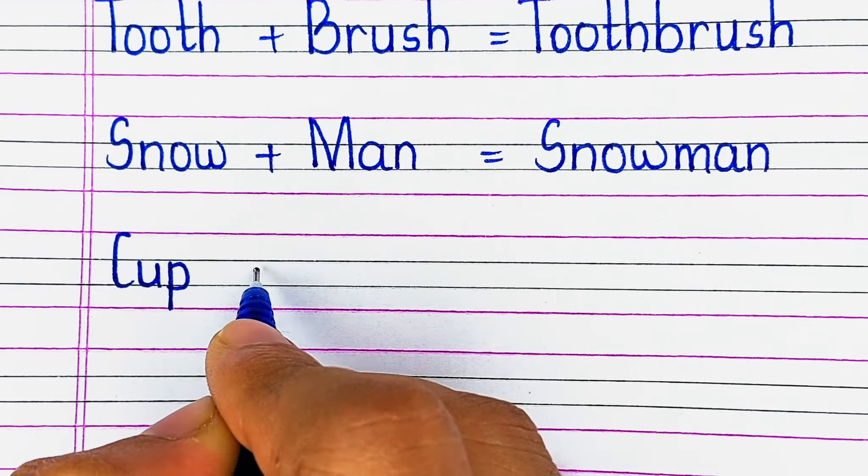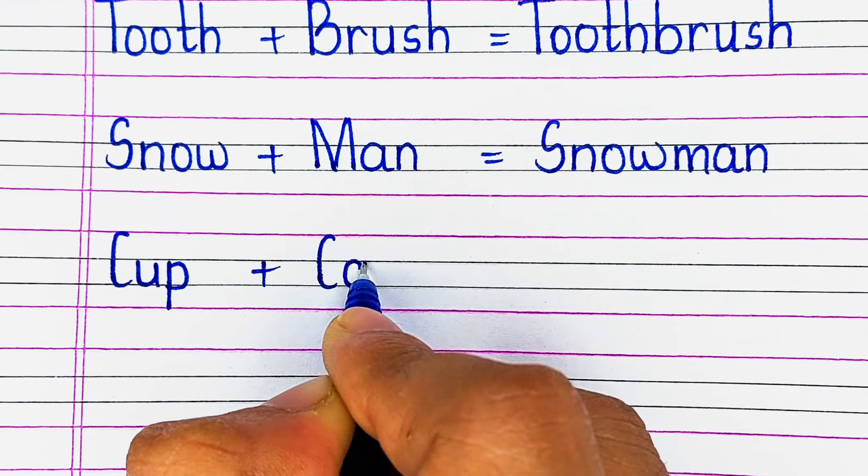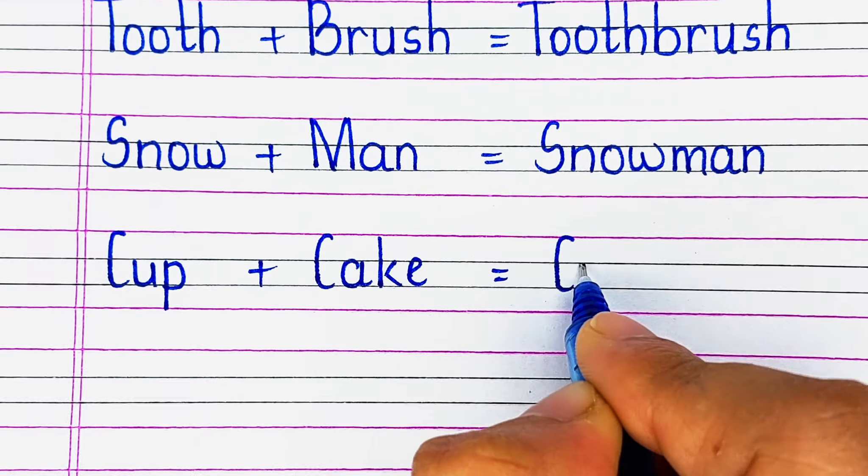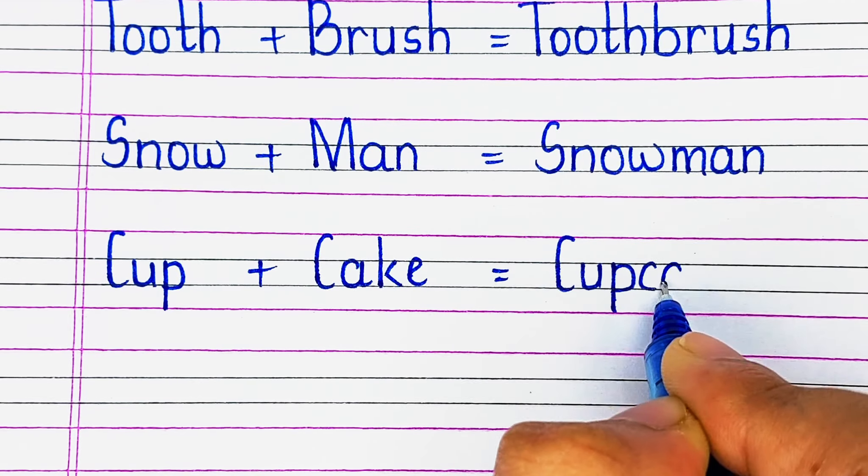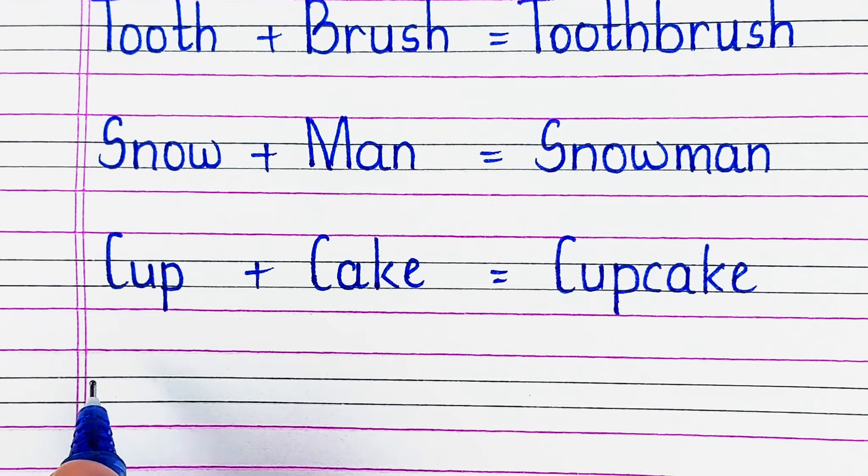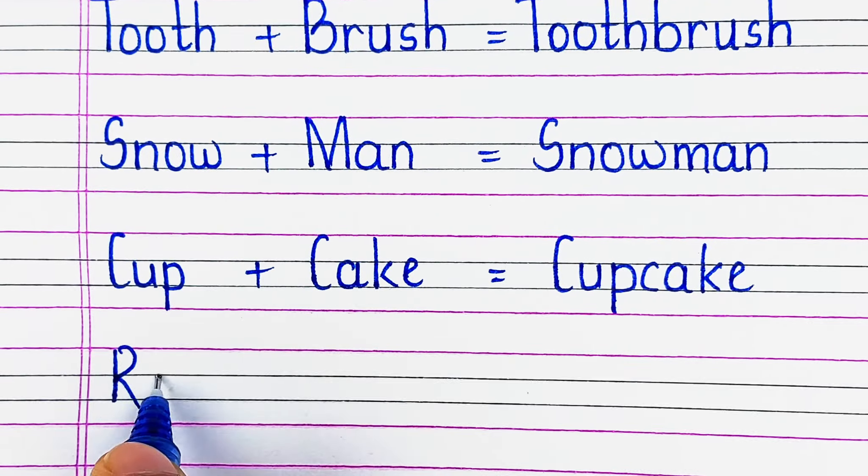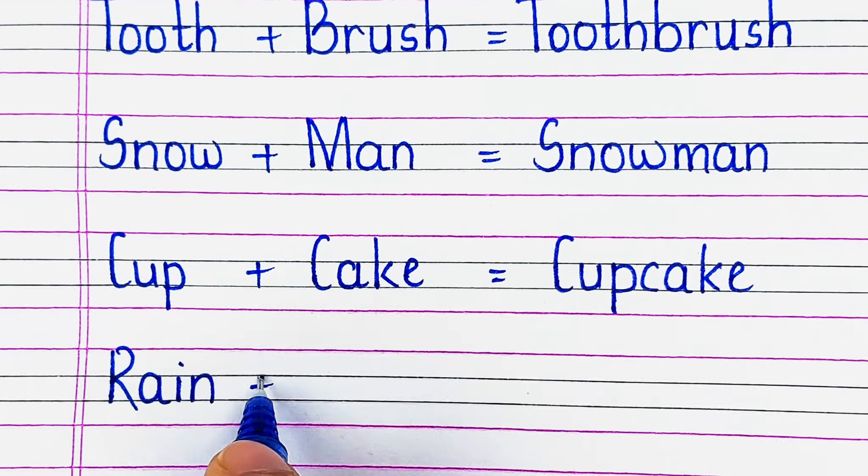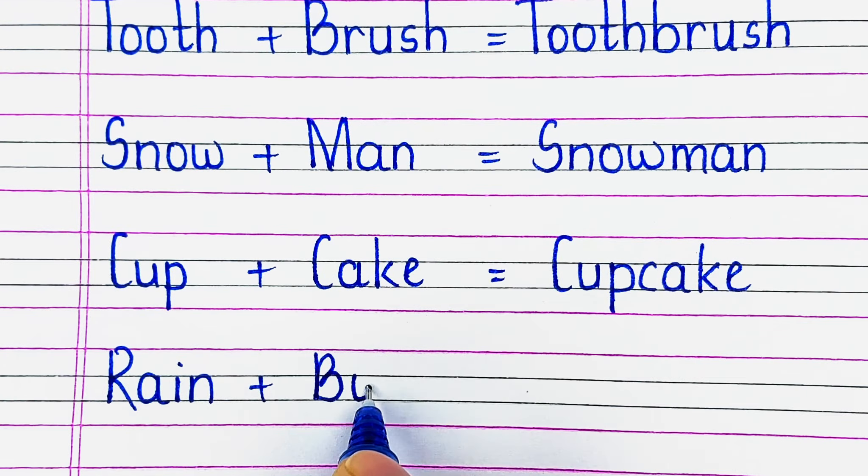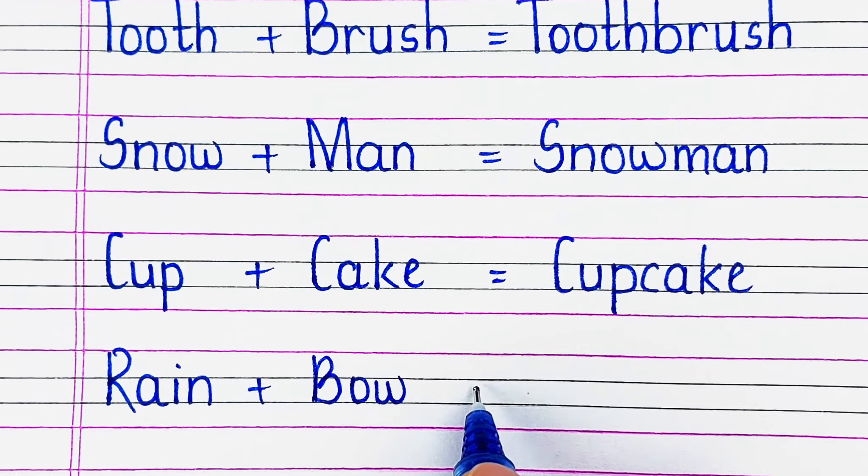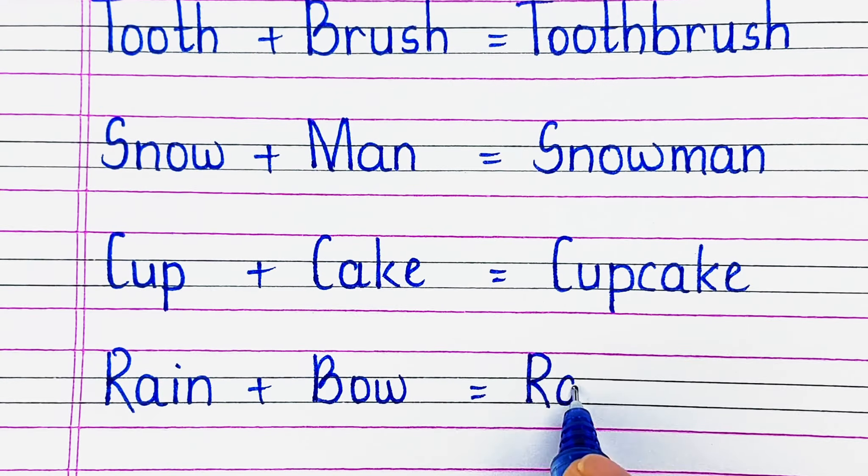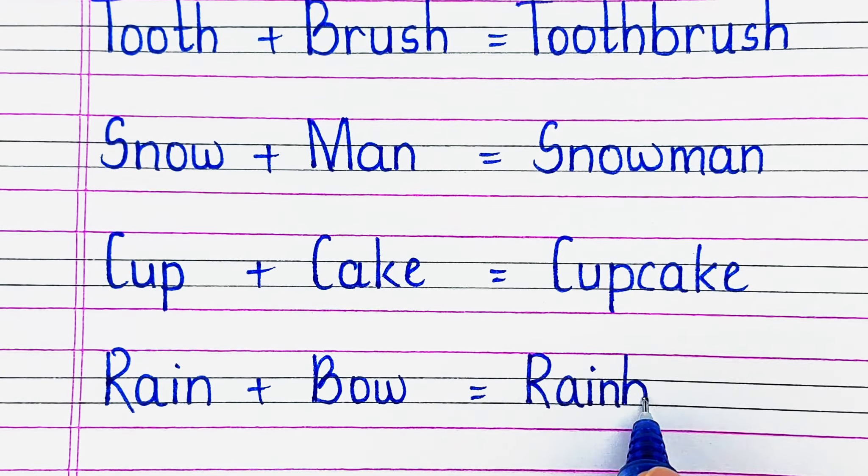Next is C-U-P cup plus C-A-K-E cake, cupcake. Next, R-A-I-N rain plus B-O-W bow, rainbow.